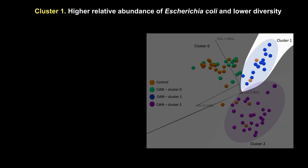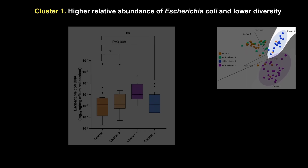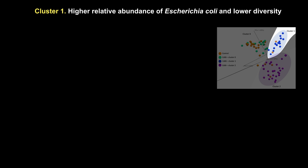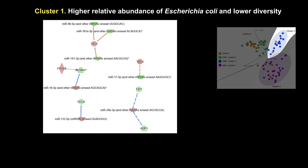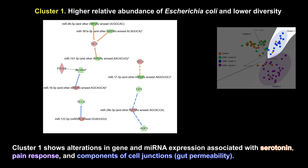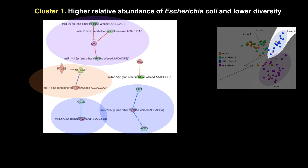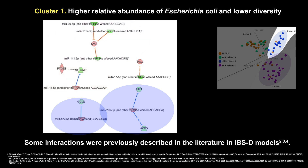Cluster 1 had higher relative abundance of Escherichia coli and lower diversity, which mimics the hydrogen microtype related to IBS-D, SIBO, and the production of breath hydrogen. Cluster 1 shows alterations in gene and microRNA expression associated with serotonin, pain response, and components of cell junctions. Some interactions were previously described in the literature in IBS-D models.